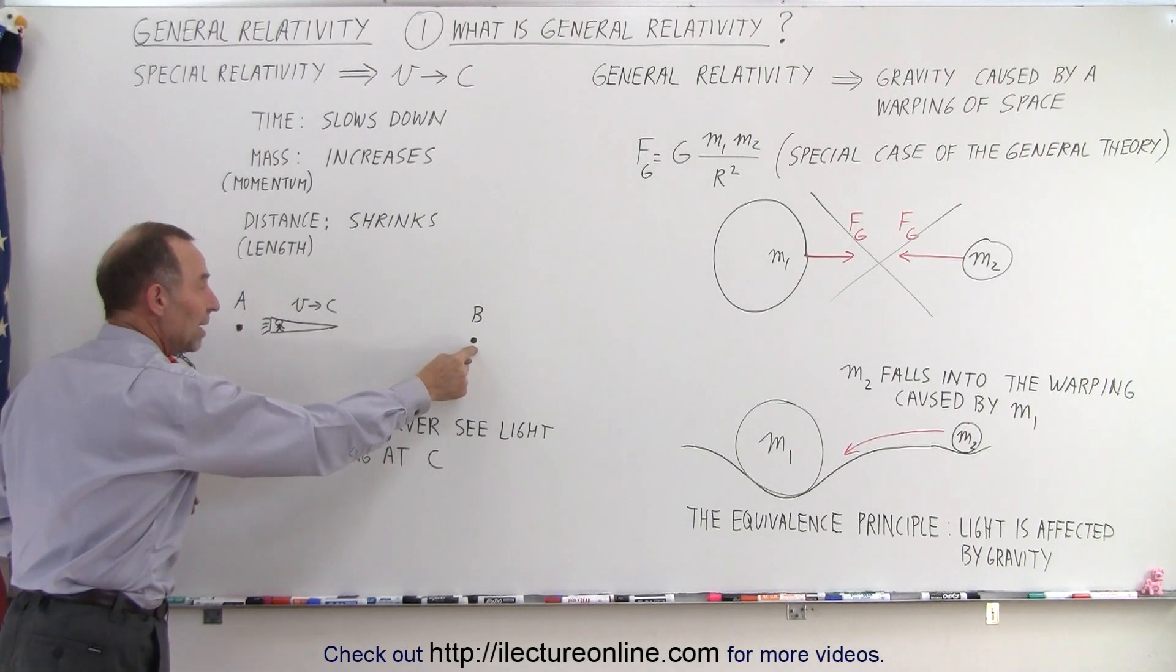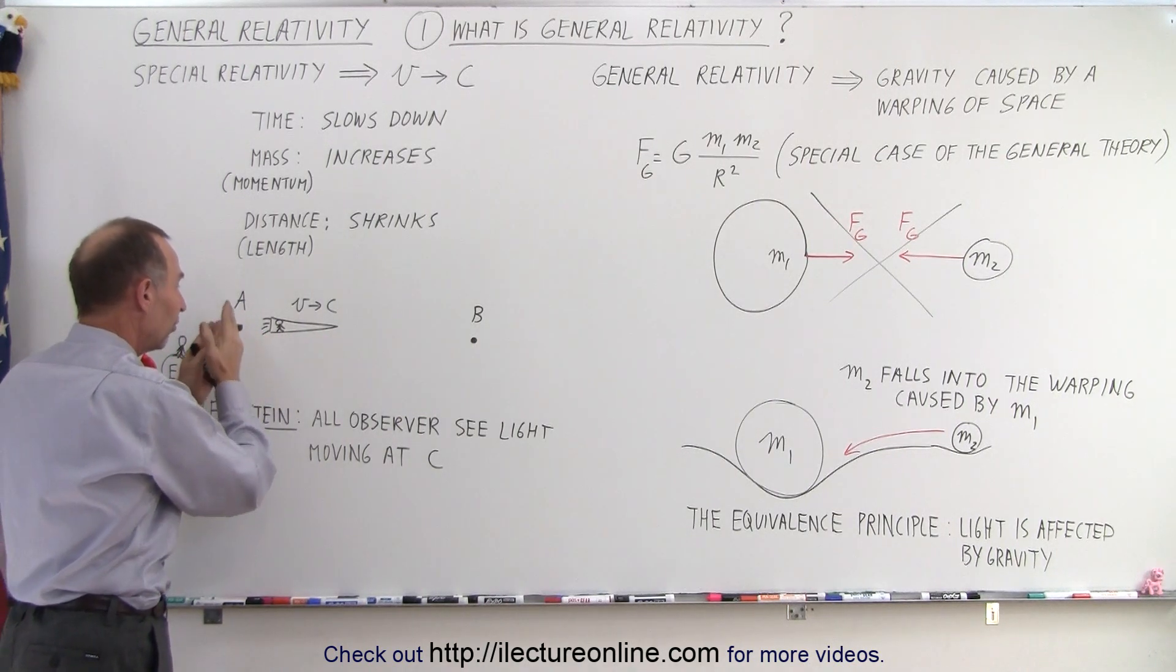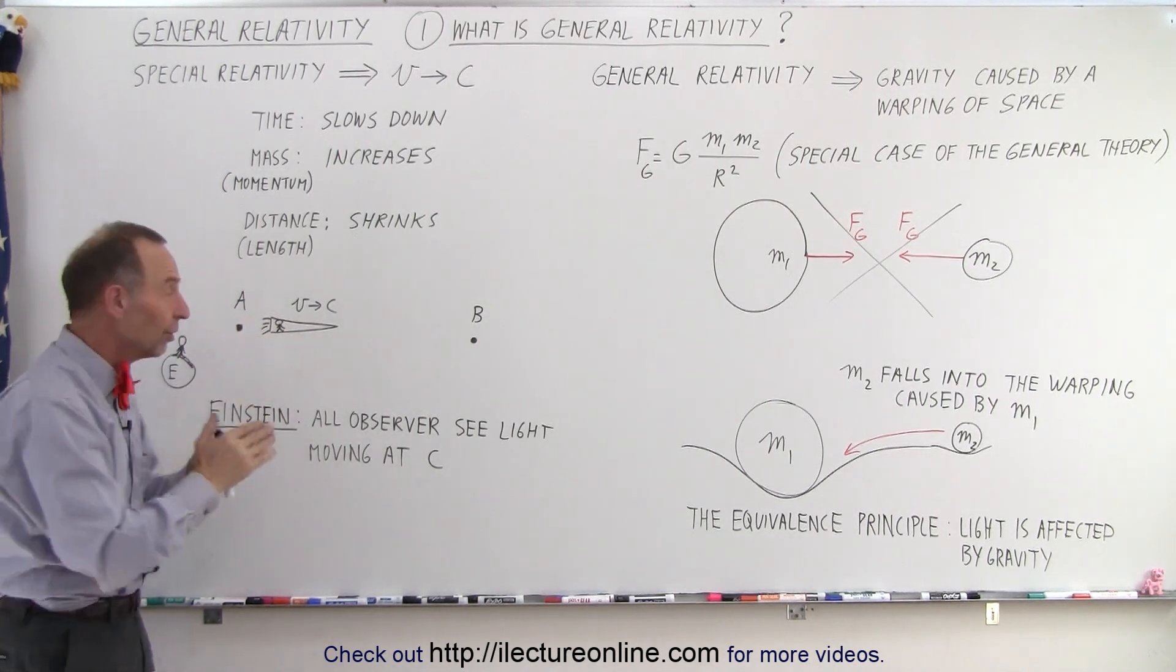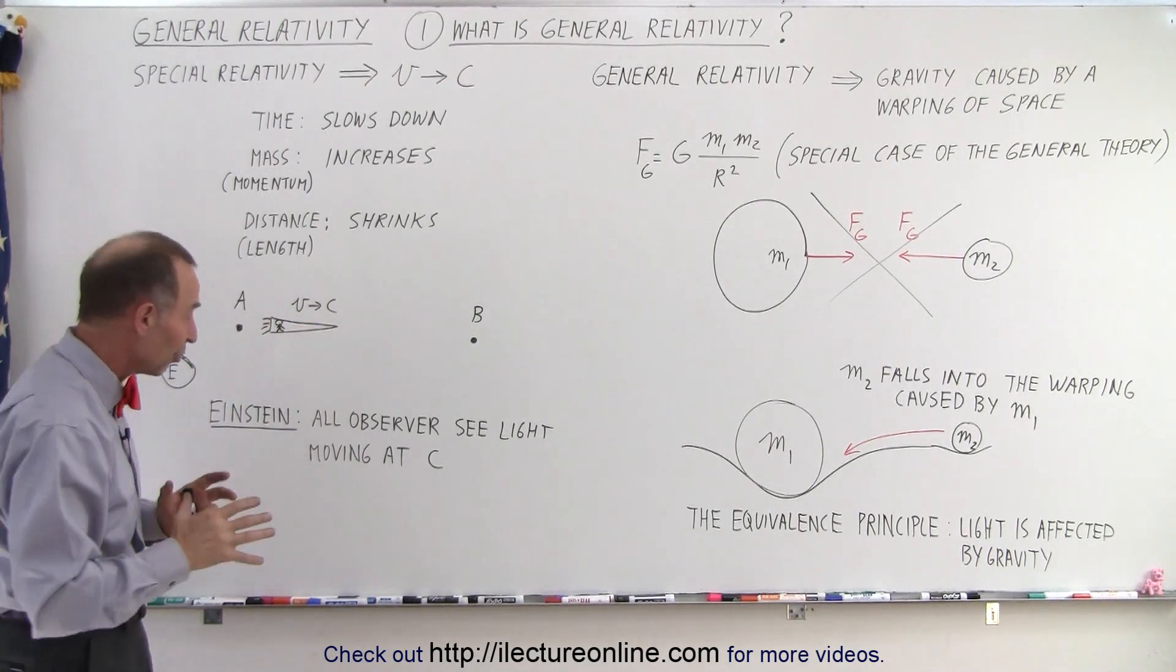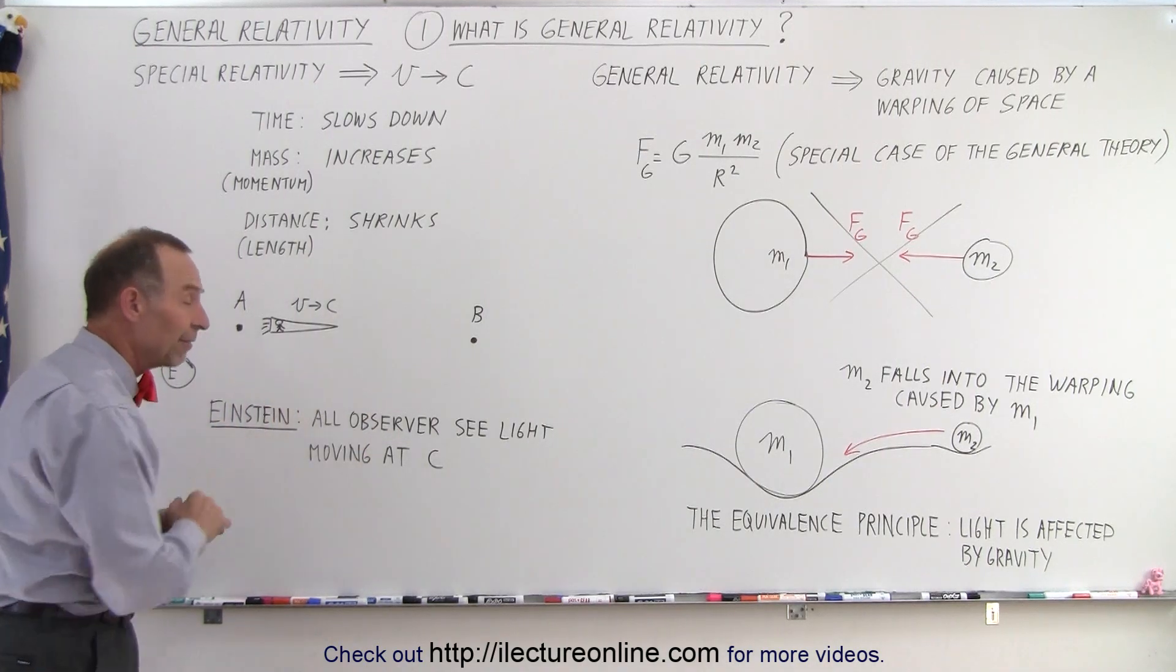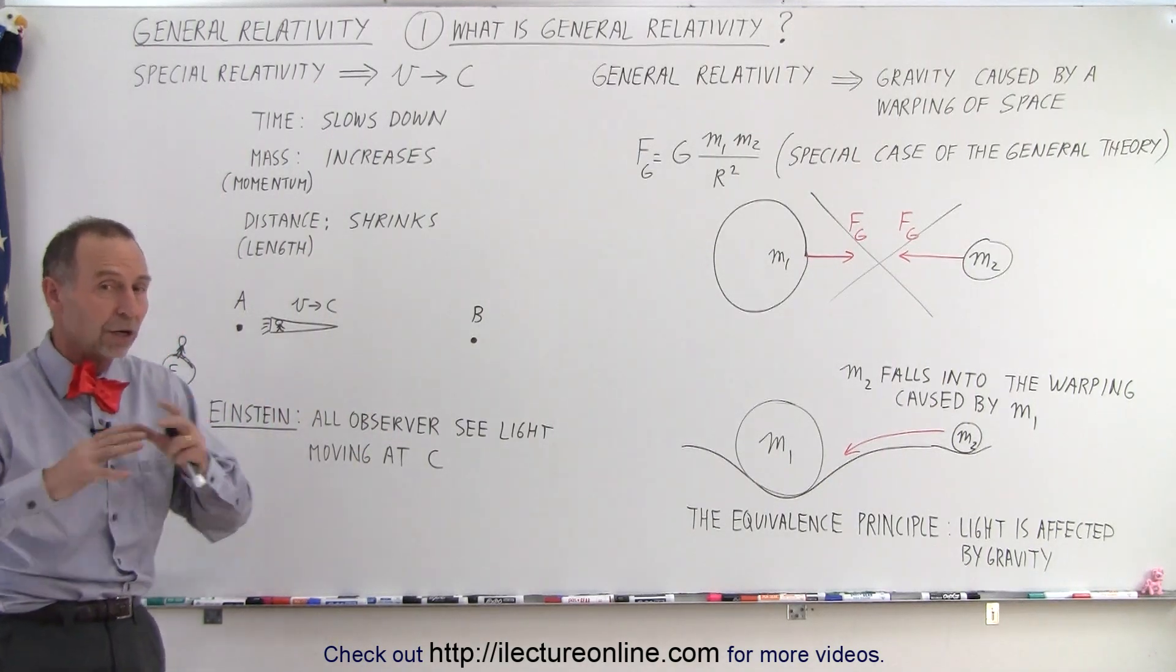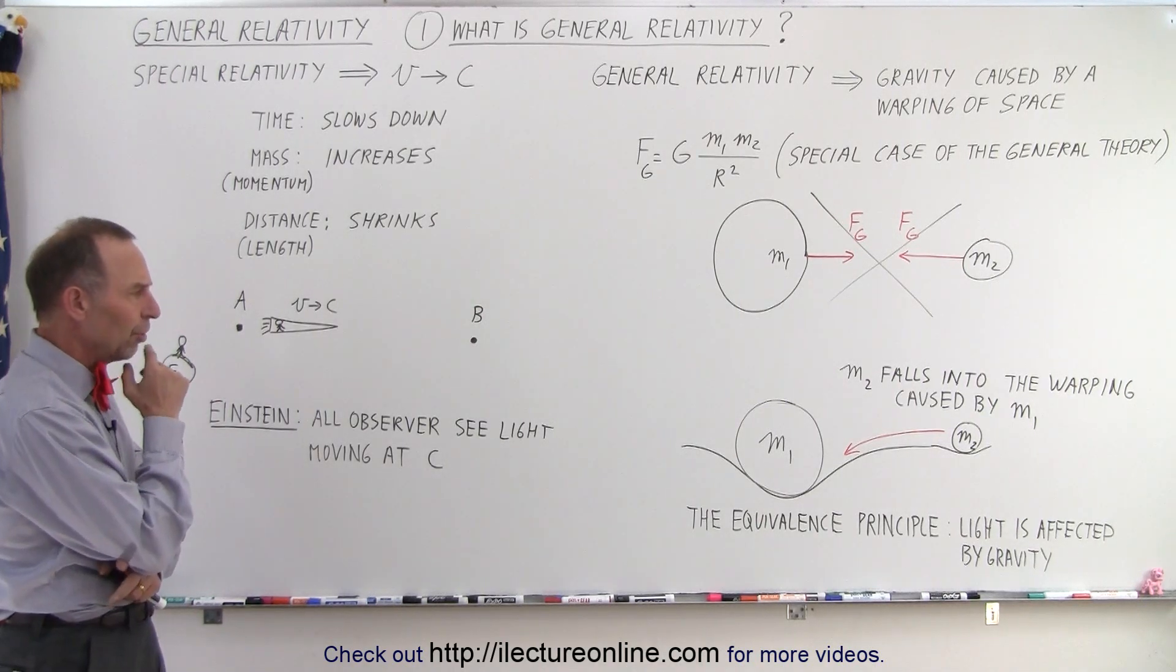The momentum or the mass would increase to infinity, and the distance would shrink to zero. So, the distance B would basically go all the way down to A, or in other words, the distance from A to B would shrink down to zero if the spaceship were to reach the speed of light. But it all came down from the realization by Einstein that all observers see light traveling at the same speed c, regardless of the speed of the source and the speed of the observer.